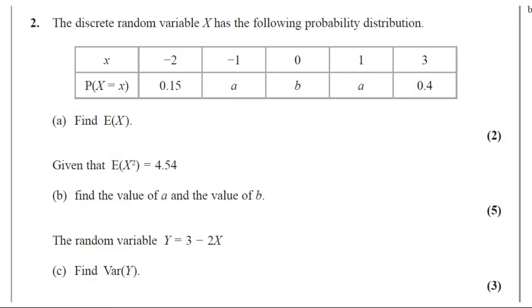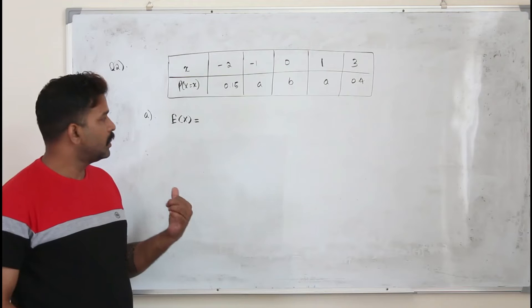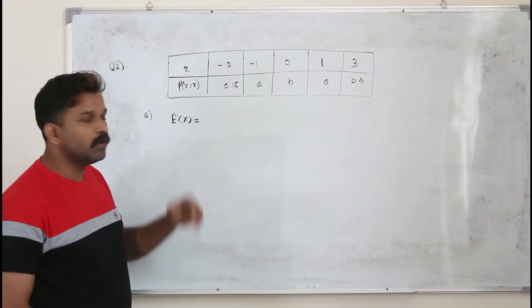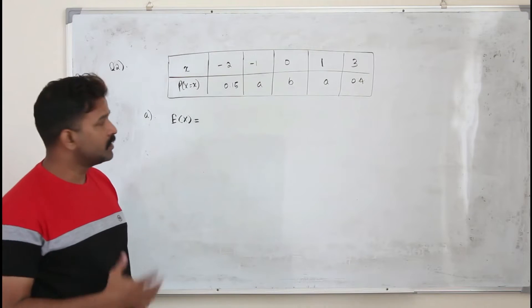Question number 2. The discrete random variable x has the following probability distribution. Part A: find E of x. This question carries two marks. In part A, they want you to find the value of E of x.